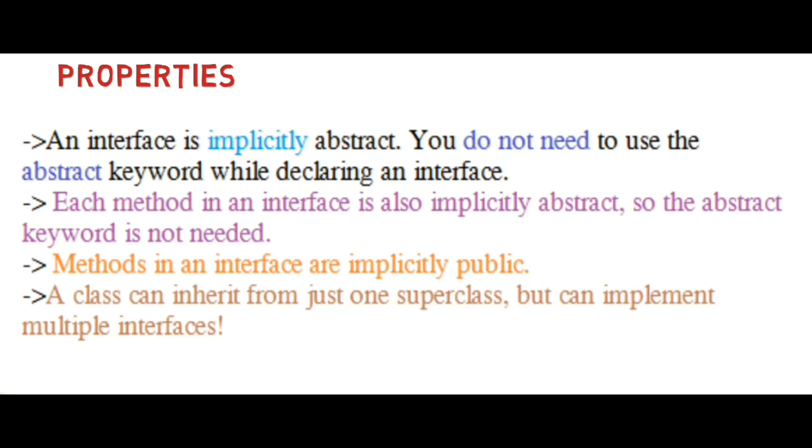An interface is implicitly abstract. You do not need the abstract keyword while declaring an interface. Methods in an interface are implicitly public by default. A class can inherit from just one superclass but can implement multiple interfaces.